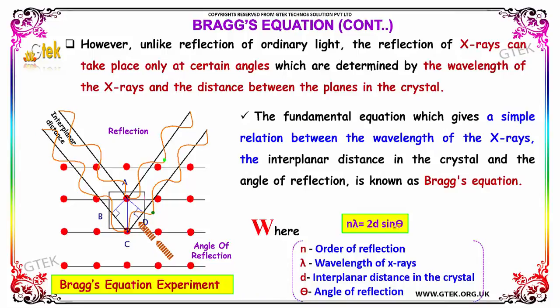This is known as Bragg's equation: N lambda equals 2D sin theta, where N is the order of reflection, lambda is the wavelength, D is the interplanar distance, and theta is the angle of reflection.